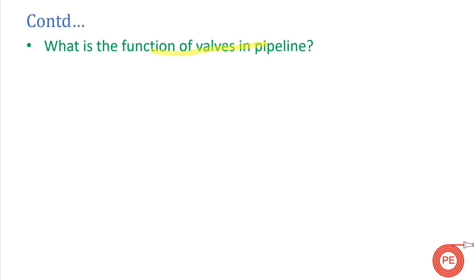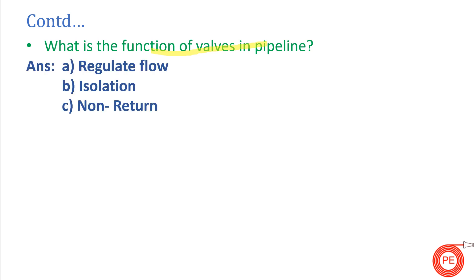What is the function of valves in a pipeline? There are different valves used in the piping industry, each serving different purposes. Commonly they serve three purposes: to regulate flow, to isolate one line from another, and to prevent flow from returning from one point to another. These are the three primary functions that valves serve in any piping system.